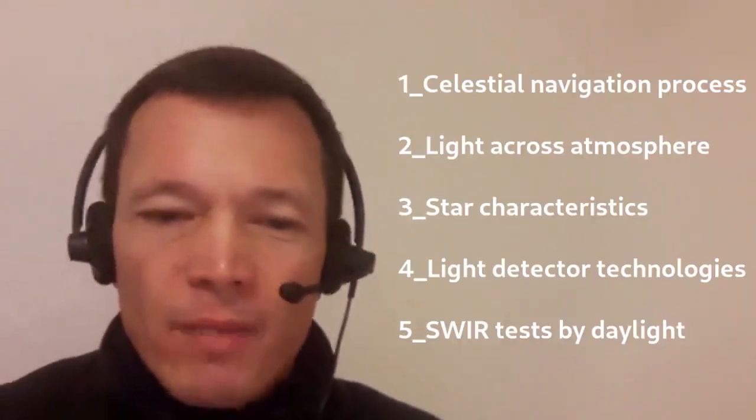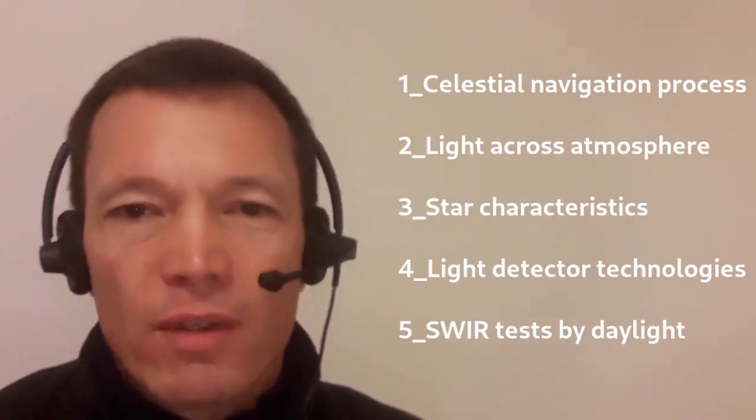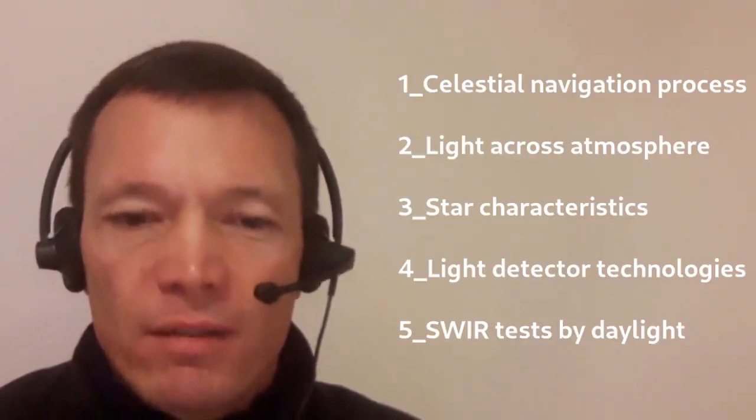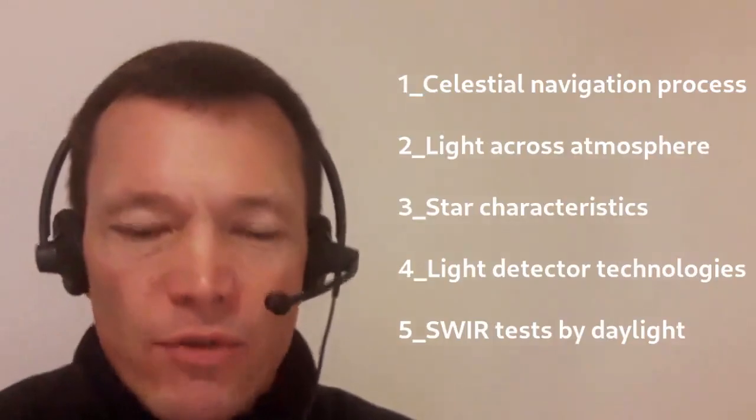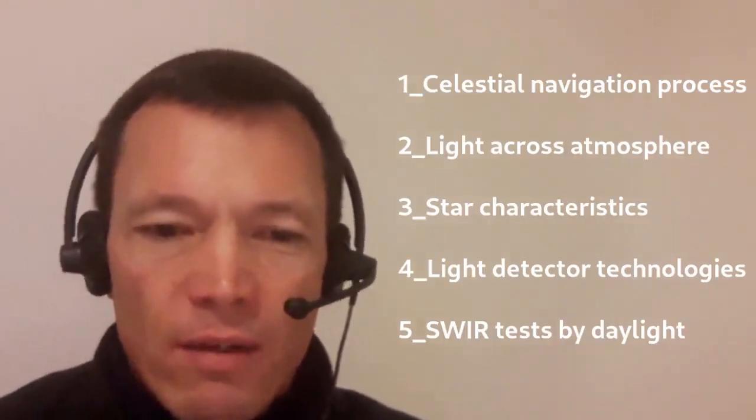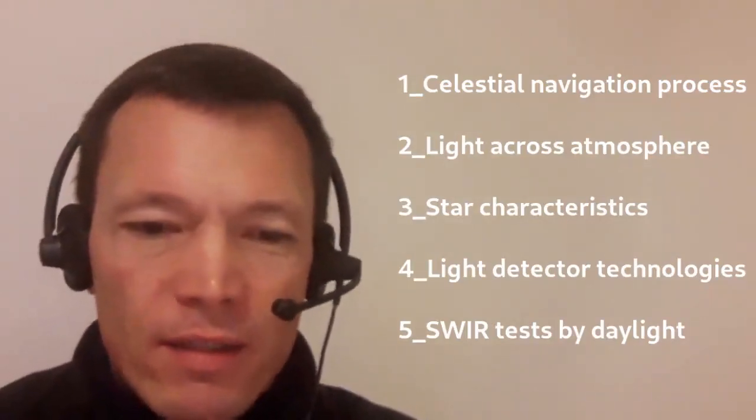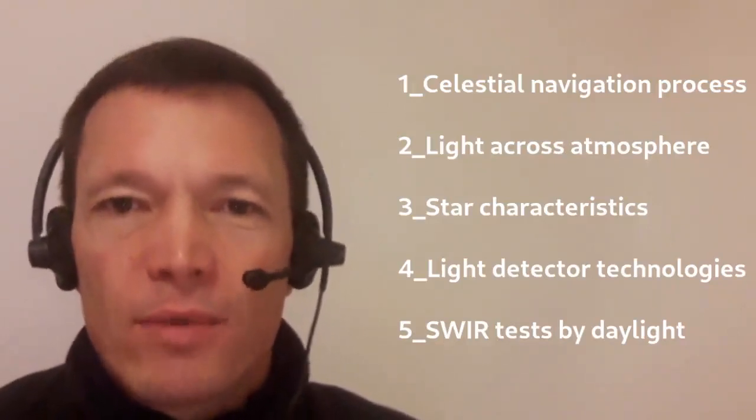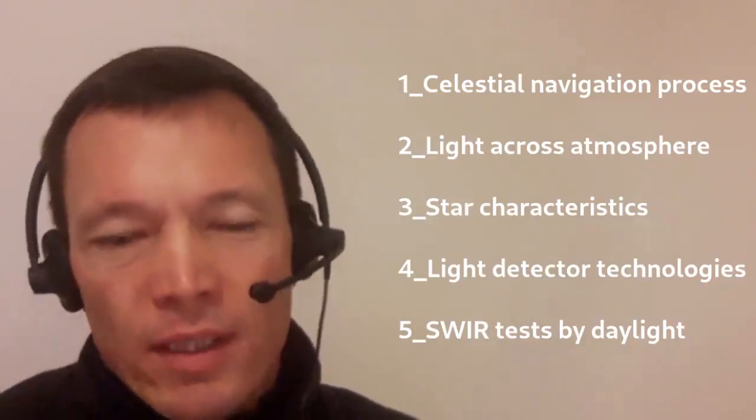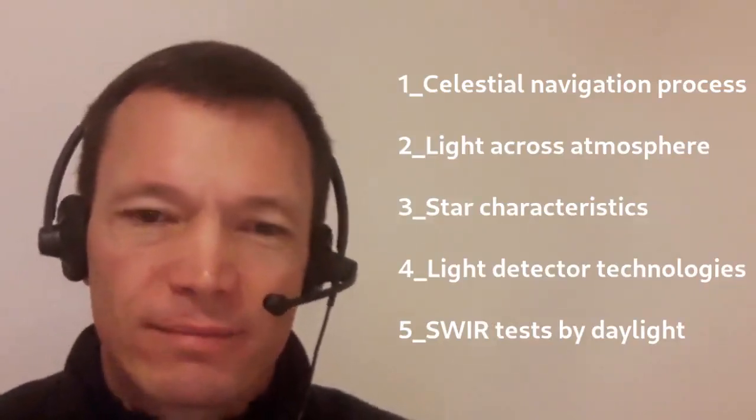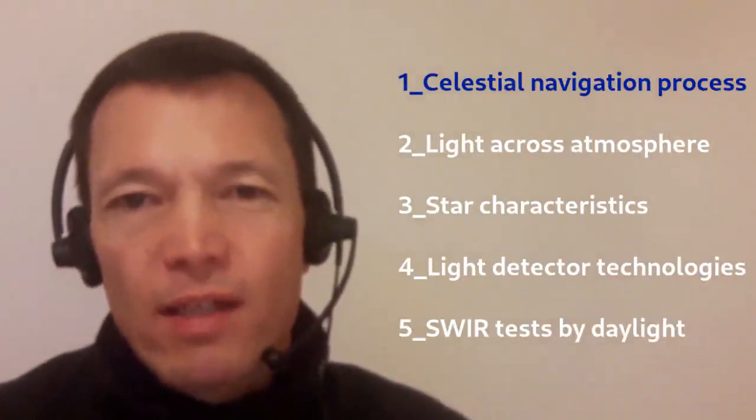This is an emergency method of navigation for a ship or for an aircraft using a sextant. In this presentation, we will first remind the main principle of celestial navigation, how to measure the attitude angles thanks to a star tracker on a satellite. In the second part, we will explain how the light can cross the atmosphere. This is a radiative transfer. In the third part, we will focus on the main characteristics of the stars, and then study the available systems of light detection, the main technologies. To end, we will give some results of our pending tests.